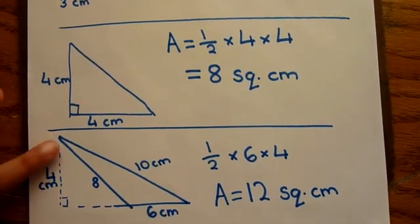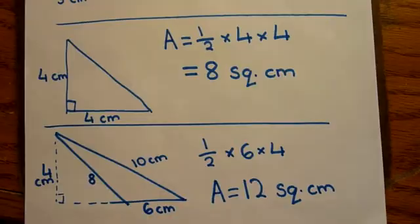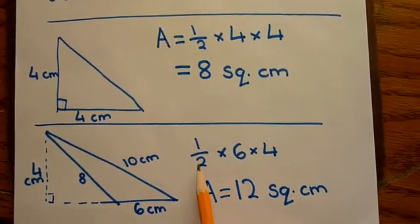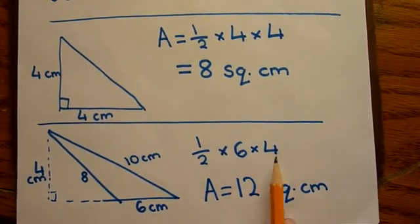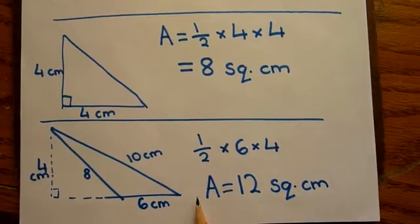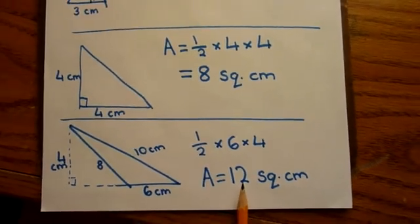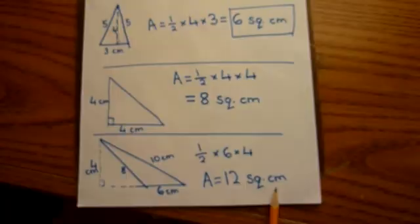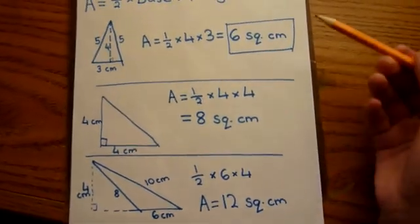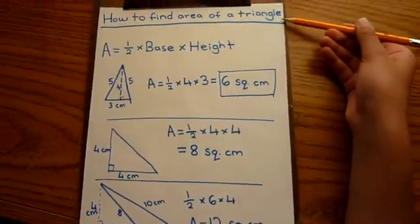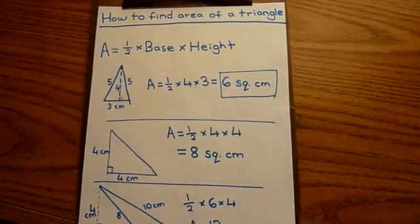So the height is 4 centimeters. So the area would be half times 6 times 4. So the area for that will be 12 square centimeters. So that's how you find the area of a triangle. Thank you for watching.